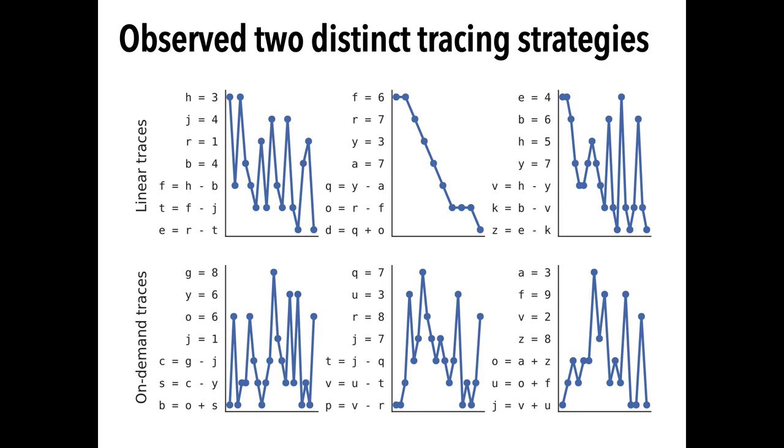By contrast, the on-demand strategy is characterized by starting at the last statement and then following data dependencies. In the bottom-left graph, the participants started at b is equal to o plus s, then went to o and s and so on. As a heuristic, we classified each person's trace as linear if they visited the first line of code before they visited the last line of code.